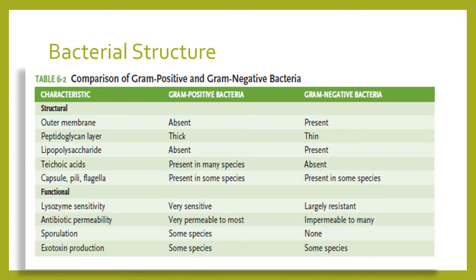Regarding antibiotic permeability, gram-positive bacteria are very permeable to most antibiotics, while gram-negative bacteria are impermeable to many antibiotics, making them very hard to control. Sporulation — the production of spores — is present in some gram-positive bacteria and not in gram-negative bacteria. Exotoxin production occurs in some species of both groups of bacteria.